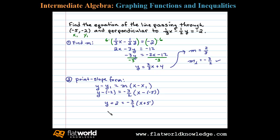Distributing -3/2 leaves us with y + 2 = (-3/2)x - 15/2. Finally, subtracting 2 on both sides, we have the equation y = (-3/2)x, and then -15/2 - 2 is -19/2. Now this is the equation of the line.